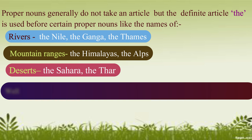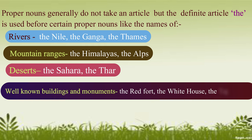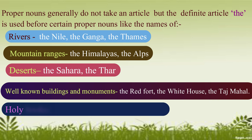Deserts like the Sahara, the Thar. Well-known buildings and monuments like the Red Fort, the White House, the Taj Mahal. Holy books like the Gita, the Bible, the Quran.